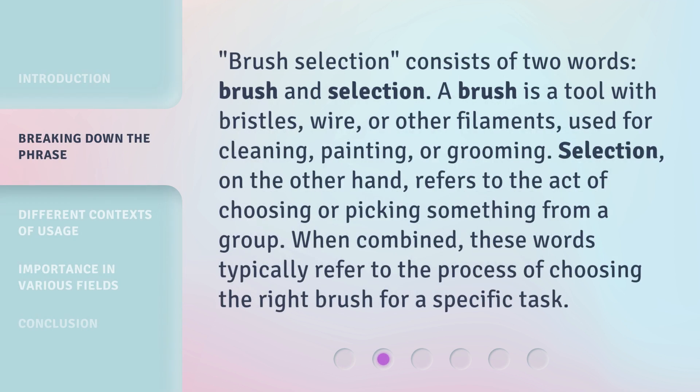Brush Selection consists of two words: brush and selection. A brush is a tool with bristles, wire, or other filaments used for cleaning, painting, or grooming. Selection, on the other hand, refers to the act of choosing or picking something from a group. When combined, these words typically refer to the process of choosing the right brush for a specific task.